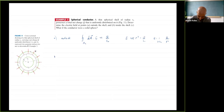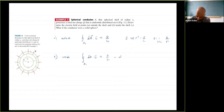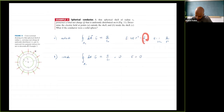Part (b), inside: I form a Gaussian surface A2 inside the shell. The total flux equals Q-enclosed over epsilon-naught, but there is no charge inside — this is a hollow spherical shell — so total charge is zero, total flux is zero, and therefore the electric field inside is zero.